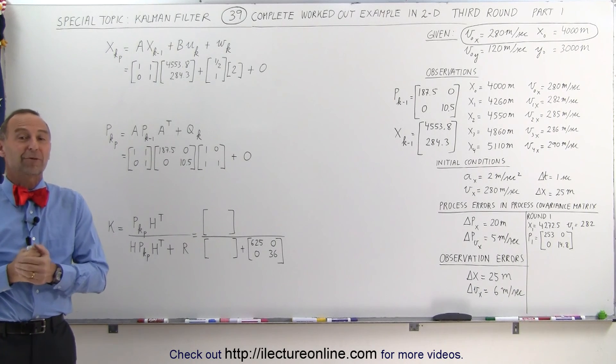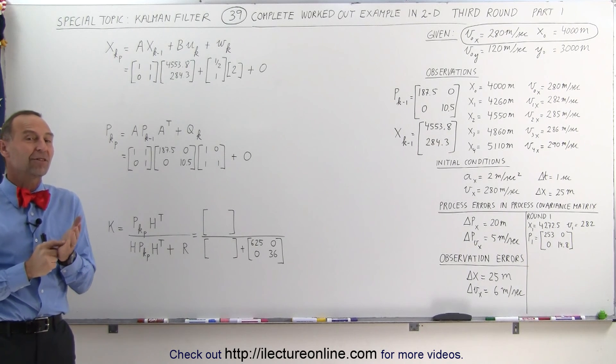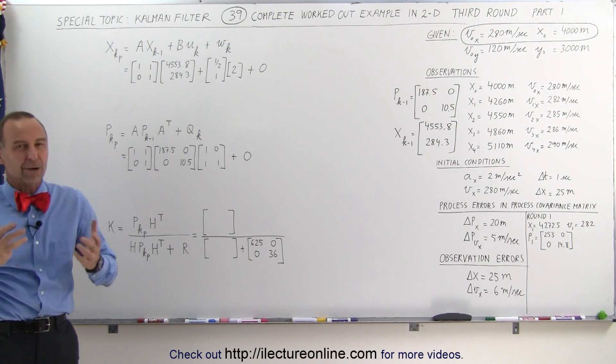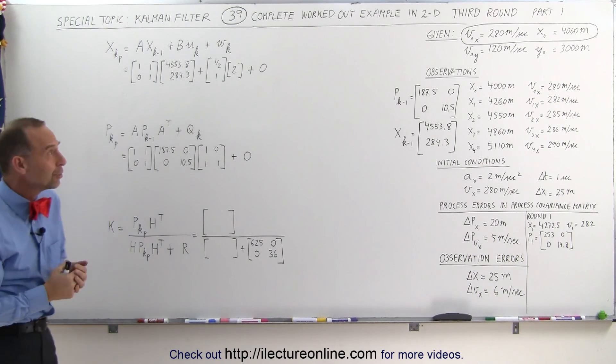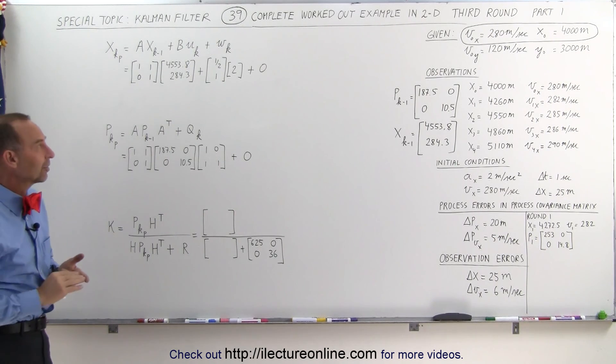Welcome to iLectureonline. Now we're ready for round three. We've already gone through two rounds of the Kalman filter process. Now we're going to do the third round. By now you're probably getting a good feel of how to do this for a two-dimensional problem where we are tracking an airplane for both position and velocity.